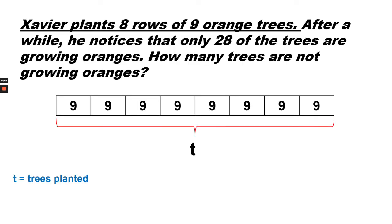Javier plants eight rows of nine orange trees. After a while he notices that only 28 of the trees are growing oranges. How many trees are not growing oranges? Looking at the bar diagram, we can see that the unknown is T. First we want to know how many trees in all Javier plants.